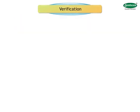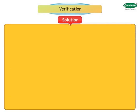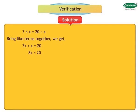Now, substituting value of x is equal to 5 by 2 in the given equation, we get: left hand side is equal to 7x, is equal to 7 into 5 divided by 2, is equal to 35 upon 2. Right hand side is equal to 20 minus x, is equal to 20 minus 5 divided by 2. Taking LCM, we get 20 into 2 minus 5 upon 2, is equal to 40 minus 5 upon 2, is equal to 35 divided by 2. Since both sides of equation are equal, our answer x is equal to 5 divided by 2 is correct.